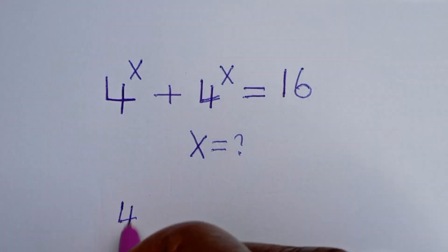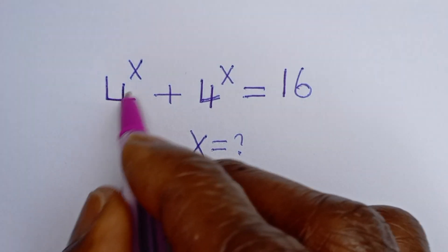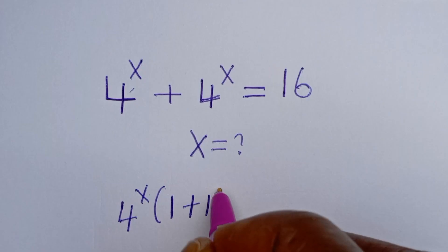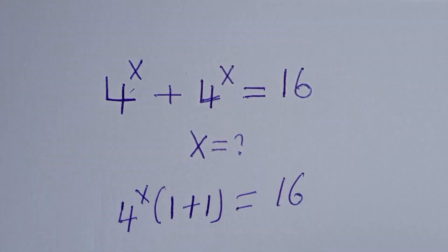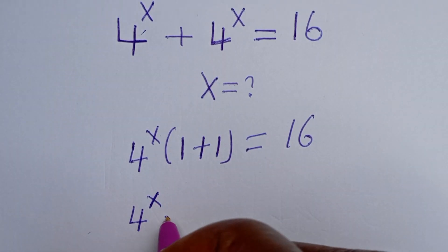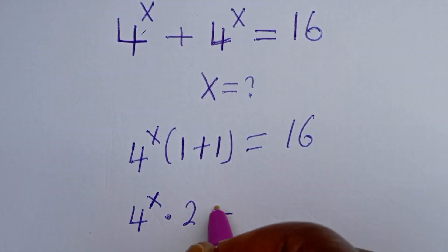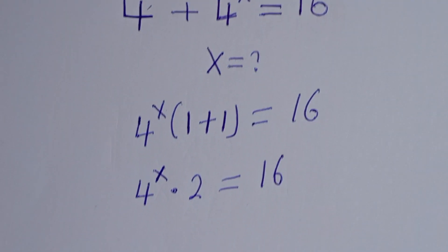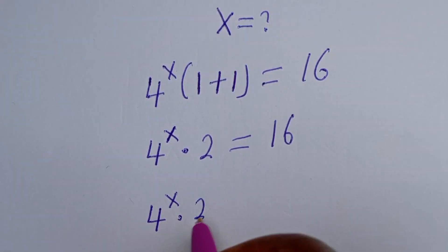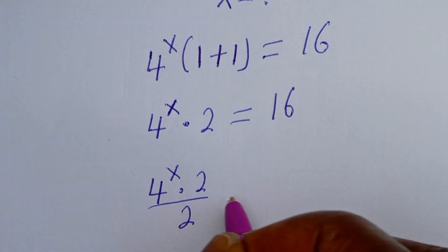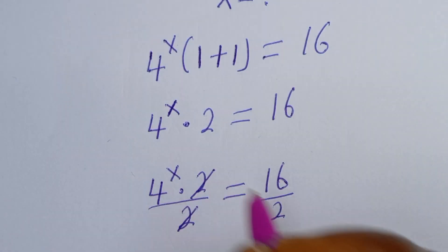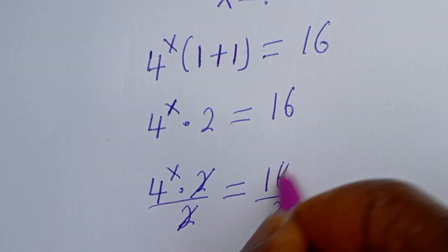We have 4 to the power of s, bracket 1 plus 1, is equal to 16. That gives us 4 to the power of s multiplied by 2 is equal to 16. Let's divide both sides by 2: 4 to the power of s equals 8.